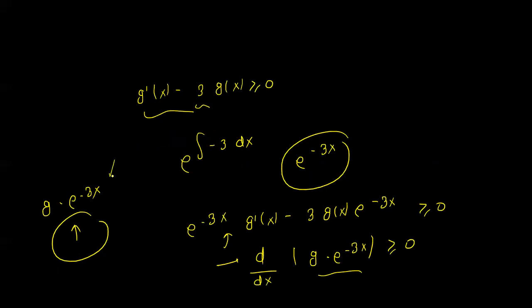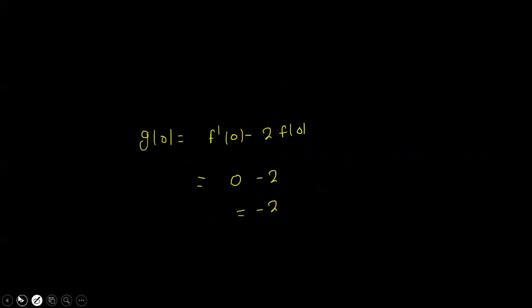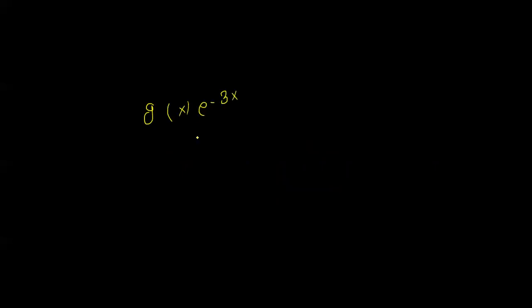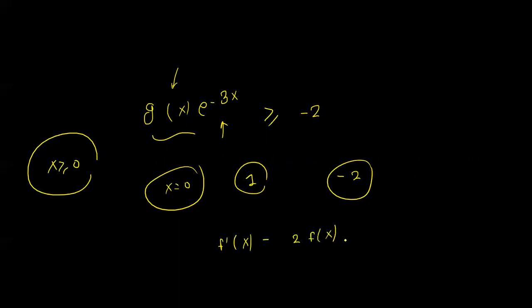Since the minimum value of x is greater than or equal to zero, we have g(x) times e^(-3x) evaluated at zero equals 0. The function is increasing, so g(x) is greater than or equal to 0, which means it is greater than or equal to minus 2. Therefore g(x), which is f'(x) minus 2 times f(x), is greater than or equal to minus 2 times e^(3x).